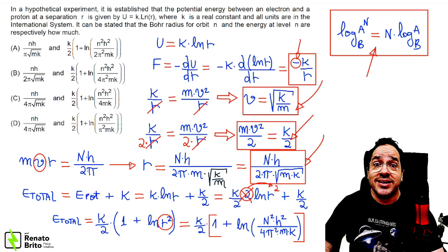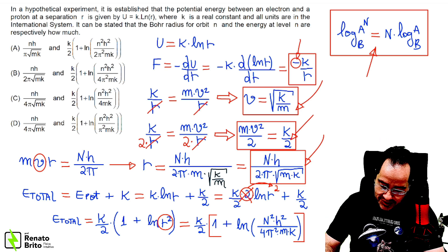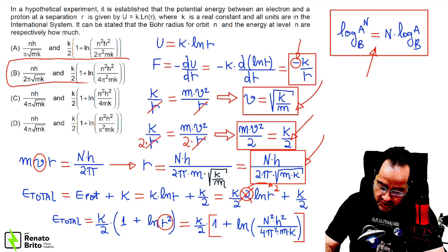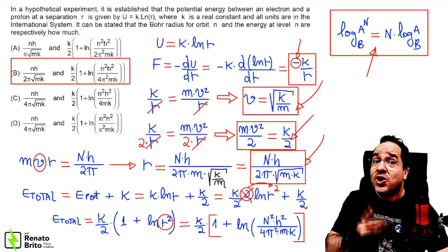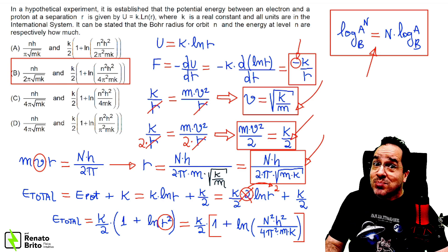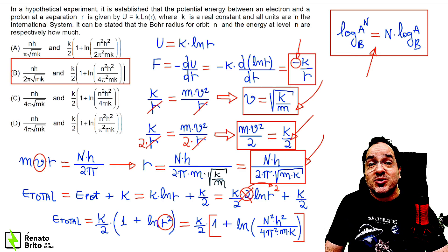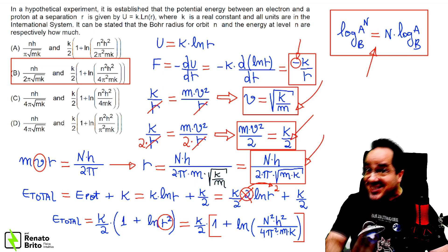We finally found the expression of the total energy of the system. If you take a look carefully at the options, you're going to realize that the correct answer is letter B. If you enjoyed this explanation, click like and please remember to subscribe to my channel so you can watch other good videos like this.